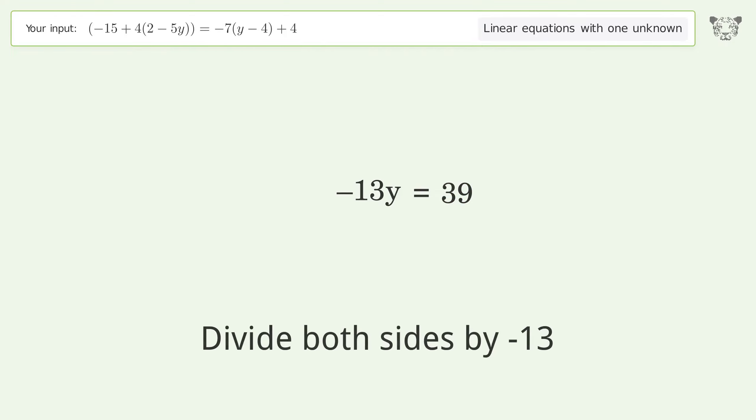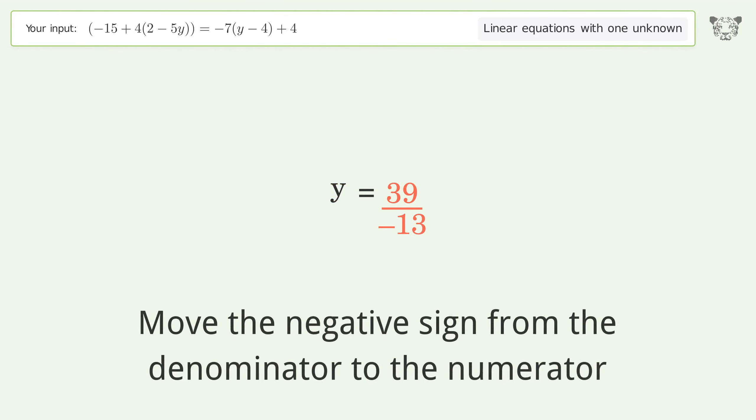Divide both sides by negative 13. Cancel out the negatives. Simplify the fraction. Move the negative sign from the denominator to the numerator.